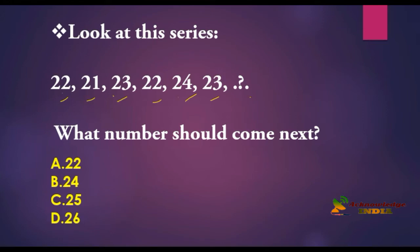I'm going to give you the particular logic in this number series. It's an alternating subtraction and addition series. If you look here, 22 minus 1 is equal to 21. 21 plus 2 is equal to 23.